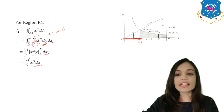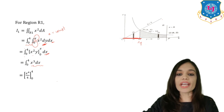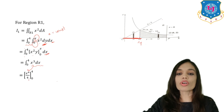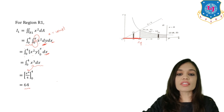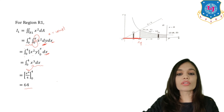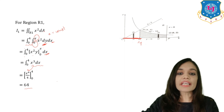Integrating x³ with respect to x gives x⁴/4, with limits 0 to 4. Putting the upper limit 4, we get 64. Putting 0, the whole term goes to 0. So the integral of x² dA over region R1 equals 64.